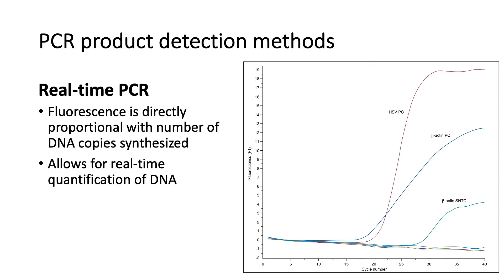In real-time PCR, fluorescence is directly proportional to the number of DNA copies synthesized. Because the amount of probe is limited, fluorescence can be plotted as a curve showing how much probe is used up in the reaction. As the curve flattens, this indicates that all the probes are being used up, allowing for real-time quantification of DNA.